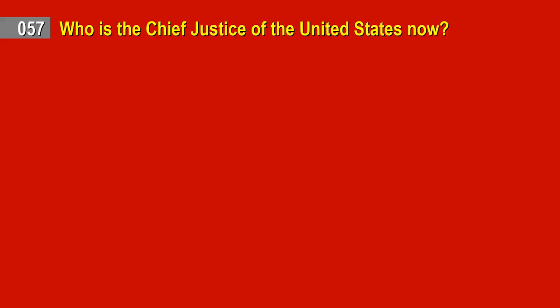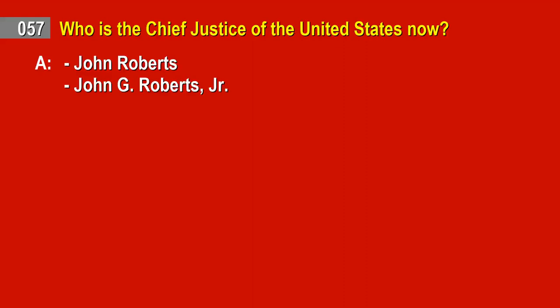Question 57. Who is the Chief Justice of the United States now? Answer: John Roberts. John G. Roberts, Jr.